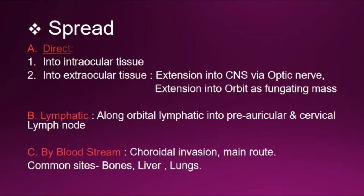Spreading of retinoblastoma may occur by direct extension, lymphatic spread, or via the bloodstream. Direct spread involves intraocular tissue extension into the central nervous system via the optic nerve, and extension into the orbit as a fungating mass. Lymphatic spread goes along orbital lymphatics to preauricular and cervical lymph nodes. Bloodstream spread via choroidal invasion is the main route; common sites are bones, liver, and lungs.